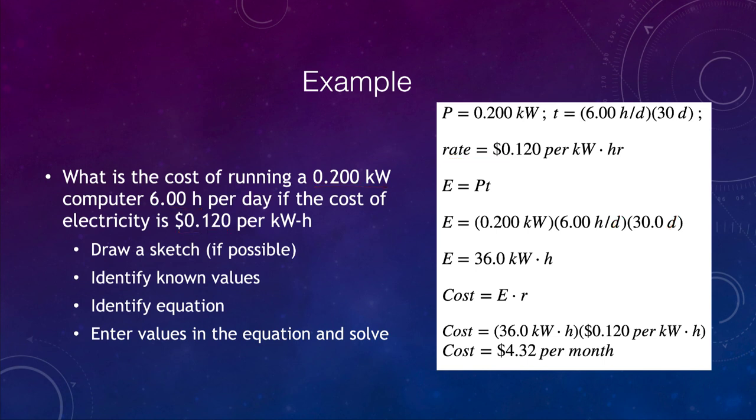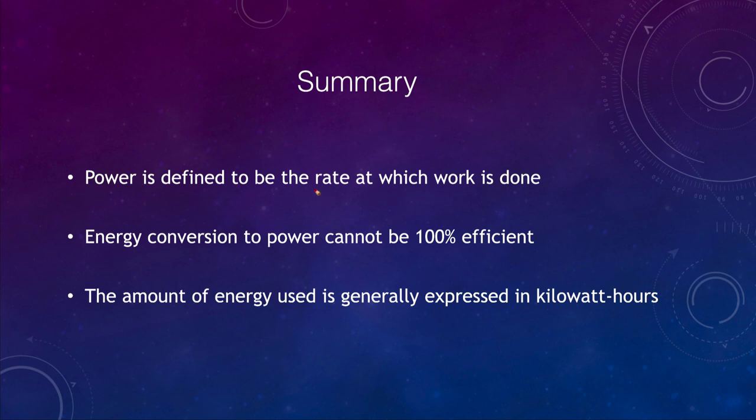So let's go ahead and finish up here with our summary. And what we looked at this time was that power is the rate at which work is done. So power was the work divided by the time. The energy conversion to power is never 100% efficient. It always is a little bit less than that, and at least a little bit of energy is lost as heat. It can be more or less because some things are very efficient and some things are very inefficient. But we know that energy conversion can never be 100% efficient. And the amount of energy used, we expressed that in kilowatt-hours. And we did an example there to show how to calculate the amount of energy consumed by a computer over the course of a month. So that concludes this lecture on power. We'll be back again next time for another topic in physical science. So until then, have a great day, everyone, and I will see you in class.